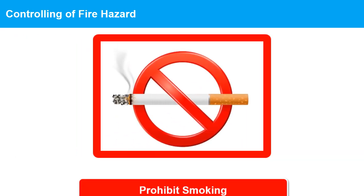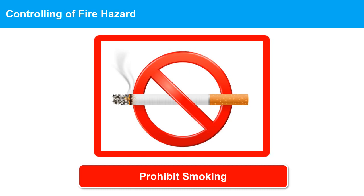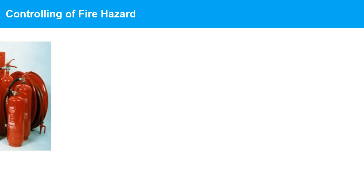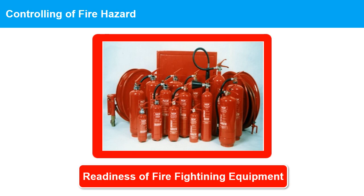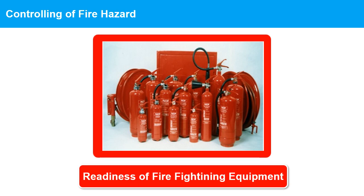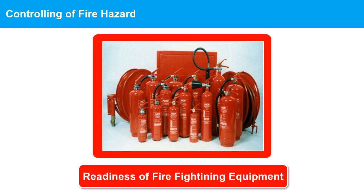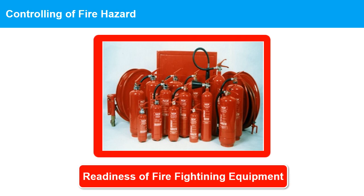9. Prohibit smoking in the workplace and avoid the use of open flames to help control fire hazards in industries. 10. Readiness of firefighting equipment: ensuring the readiness of firefighting equipment is critical in controlling fire hazards. Regular inspections, proper storage, maintenance, testing, training, replacement, and cooperation with the fire department are key steps to ensure the readiness of firefighting equipment.